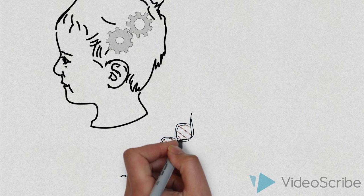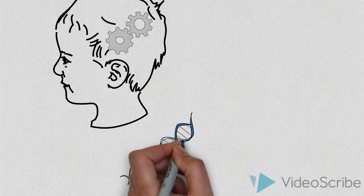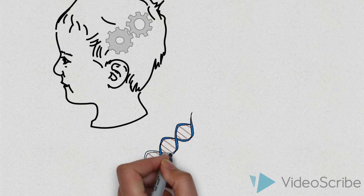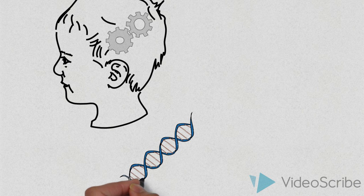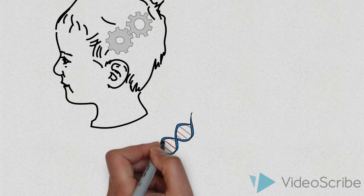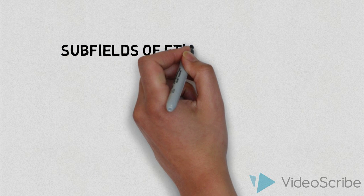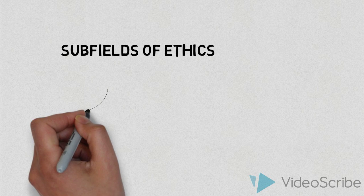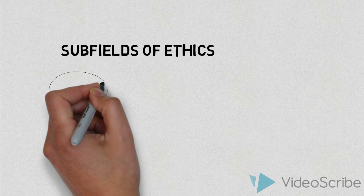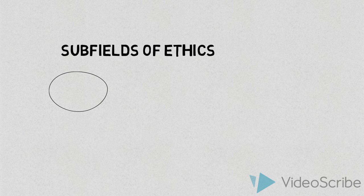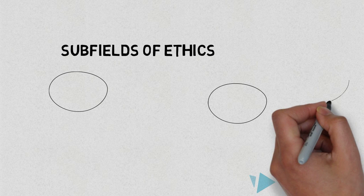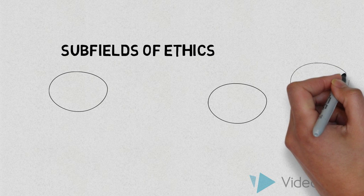For example, are there situations when it's okay to lie? Or maybe you've wondered if genetic engineering is ever morally wrong? This series will help you answer those questions, as well as others that are more fundamental to morality. In this video, we'll look at the kinds of issues that come up in the field of ethics.